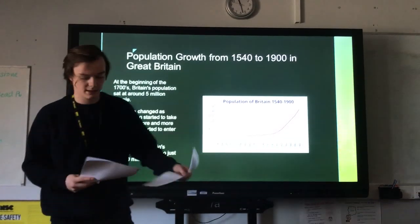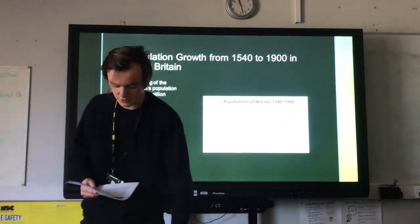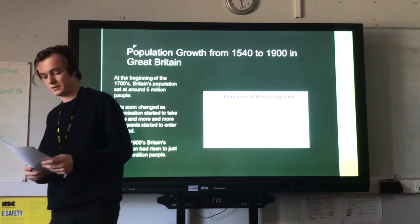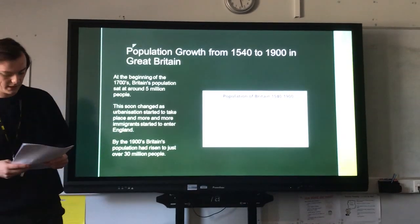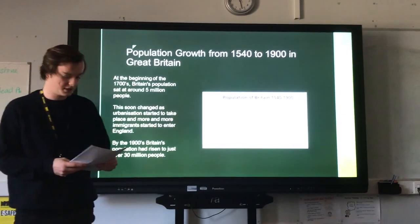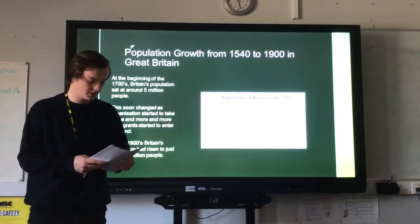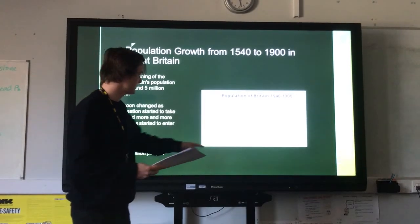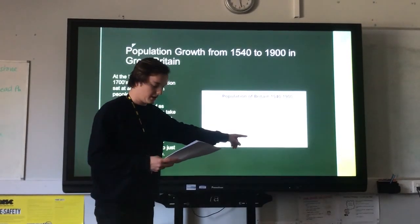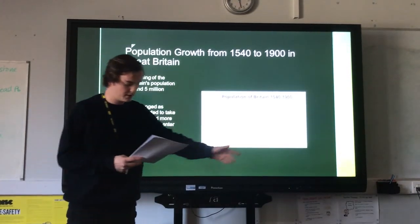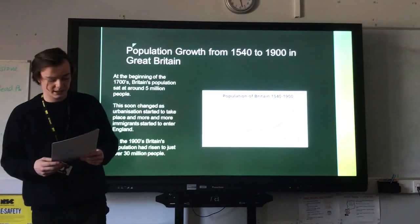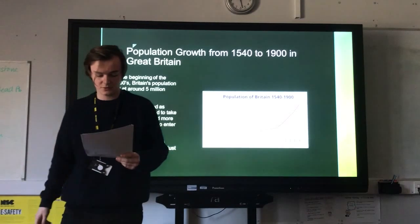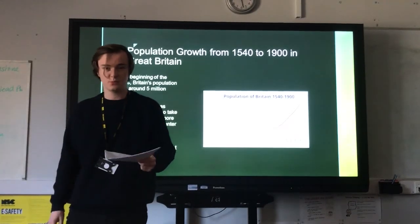Here we can see population growth from 1540 to 1900 in Great Britain. This graph shows the rapid increase of the population of Great Britain, most notably the swift incline during the late 1700s and early 1800s. At the beginning of the 1700s, Britain's population was around 5 million people.